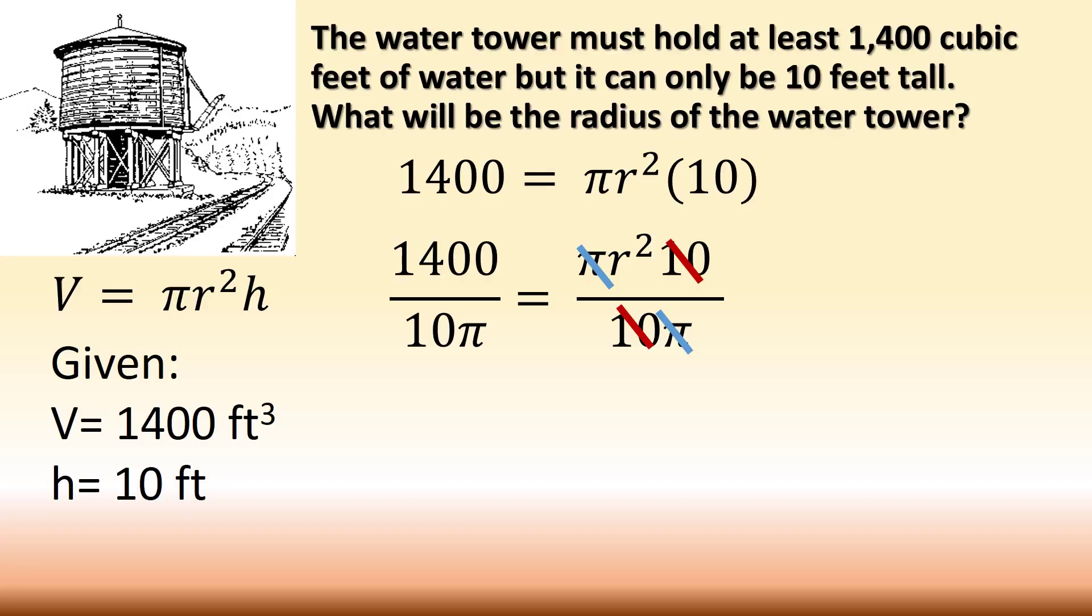Now, r squared is left on the right-hand side. We're getting there, getting it all by itself. But on the left-hand side, what do I have? I need to take 1,400. Let's put that in the calculator. And we're going to divide it by 10 pi. When you do that, what do you get? Alright, I get r squared equals 44.56 approximately.